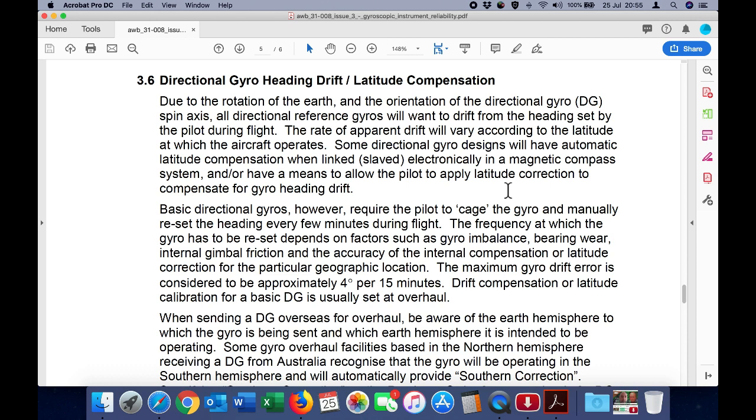Directional gyro heading drift latitude compensation. Due to the rotation of the earth and the orientation of the directional gyro DG spin axis, all directional reference gyros will want to drift from the heading set by the pilot during the flight. The rate of apparent drift will vary according to the latitude at which the aircraft operates.